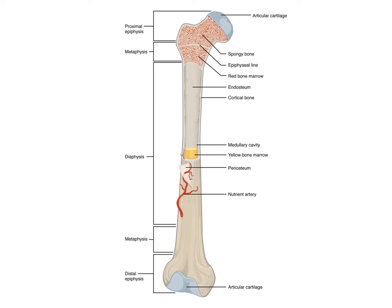Going back to the diagram of the mature femur, you can see the epiphyseal line and the epiphyses, which were built from the secondary ossification centers. You can see the diaphysis, built by the original primary ossification center, and the metaphysis, which is the region produced by the epiphyseal plate — the result of growth that occurred after the primary ossification center was done.